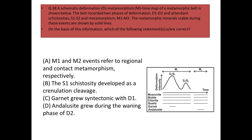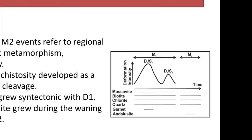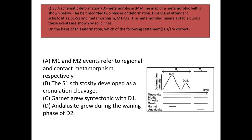Garnet grows syntectonic with D1 — looking at the stability zone of garnet, it is stable only when the deformation intensity of D1 is maximum, and as deformation intensity goes down garnet vanishes. Syntectonic means garnet grew simultaneously with the deformation D1, so option C is correct. Andalusite grows during the waning phase of D2 — not correct, because andalusite is not formed due to deformation but due to metamorphism/schistosity. So the correct answers are option A and option C.